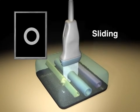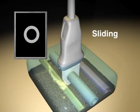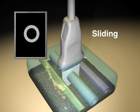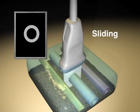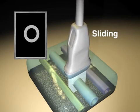Sliding is a maneuver that translates the transducer along the course of its structure, or perpendicular to it, to scan adjacent structures.